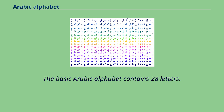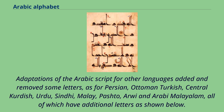The basic Arabic alphabet contains 28 letters. Adaptations of the Arabic script for other languages have added and removed some letters, as for Persian, Ottoman Turkish, Central Kurdish, Urdu, Sindhi, Malay, Pashto, Arwi, and Arabi Malayalam, all of which have additional letters.